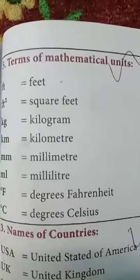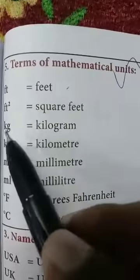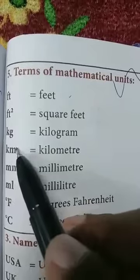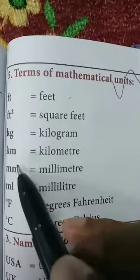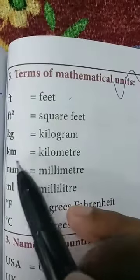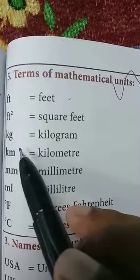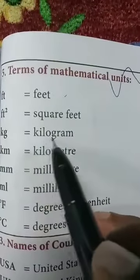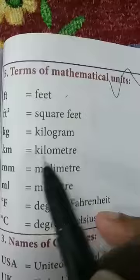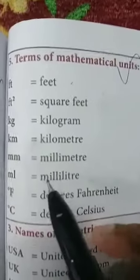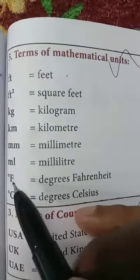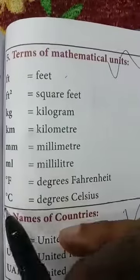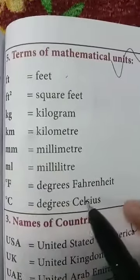Continuing with units: KG is kilogram, KM is kilometre, MM is millimetre, and L is millilitre or litre. Note that these abbreviations end with the second letter in small case for singular usage and you should not give any space. Also, °F stands for degrees Fahrenheit and °C stands for degrees Celsius.